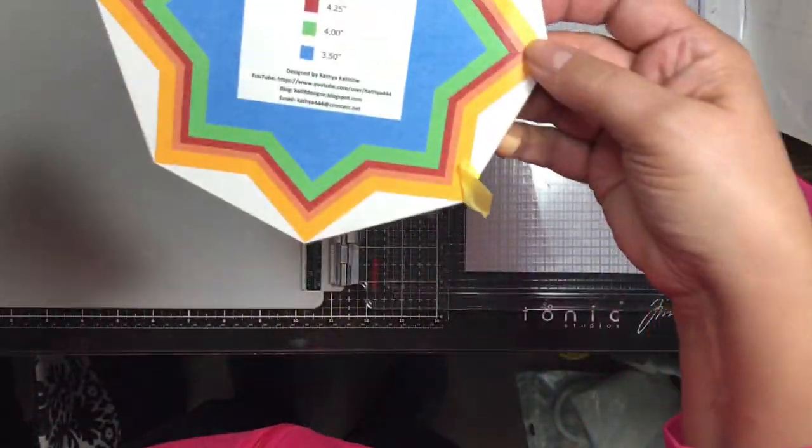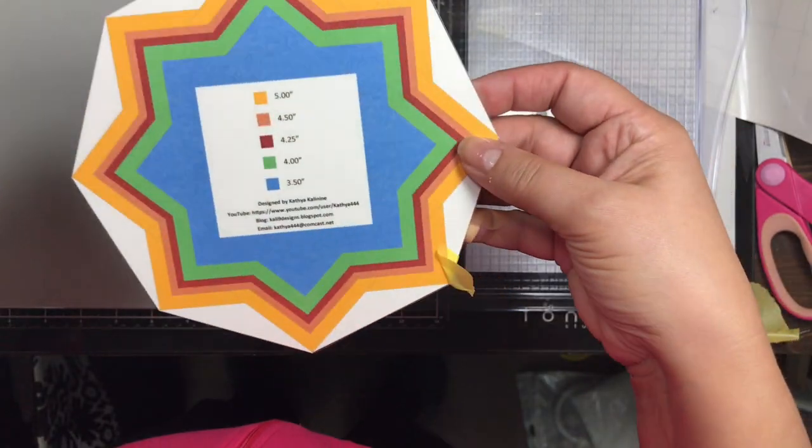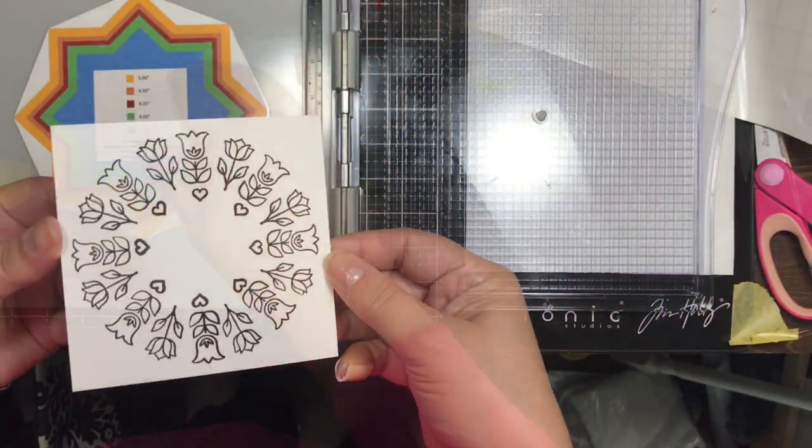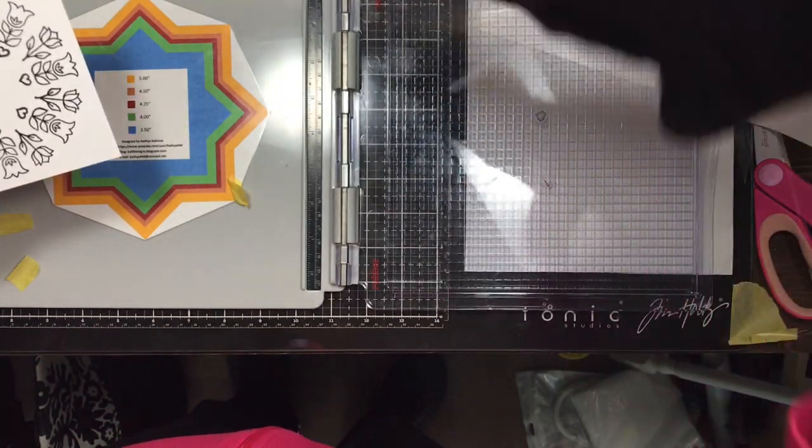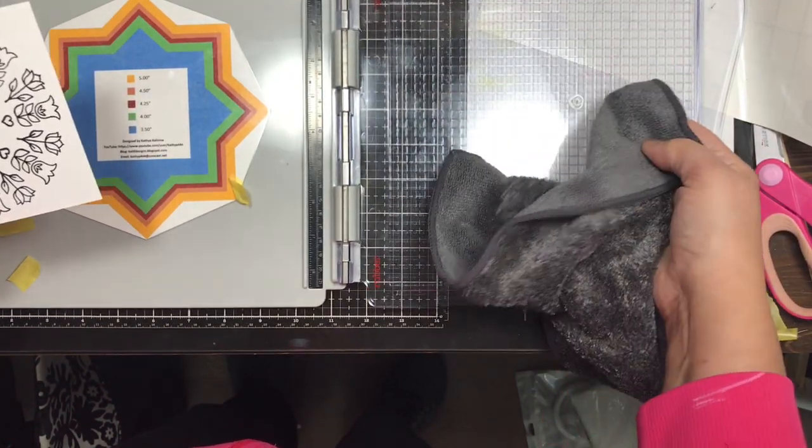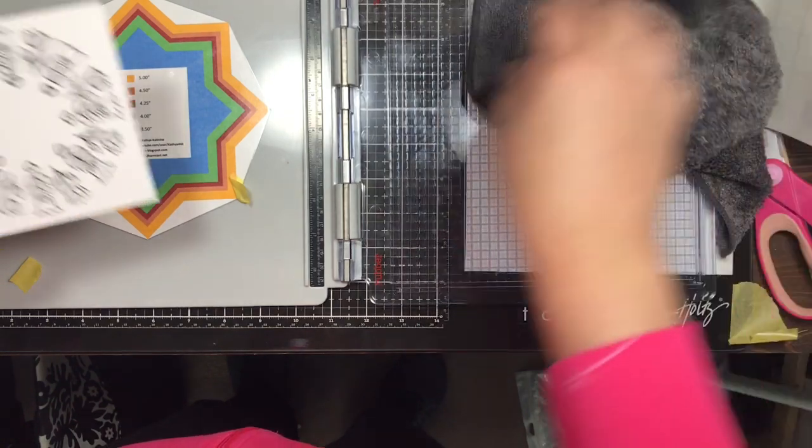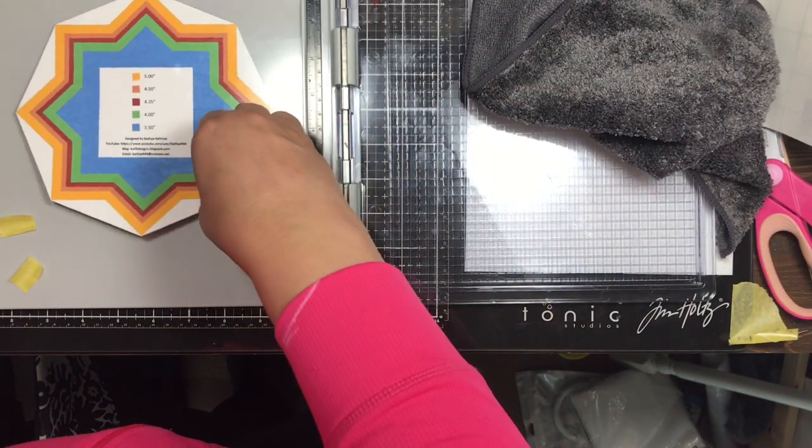I think this one was a 5-inch square or maybe a 4.25, I don't remember, four and a quarter. Anyway, so that is what the panel looks like before I colored it. There I am just wiping off that little stamp there before I put it away and lose it like I'm notorious for doing as well.